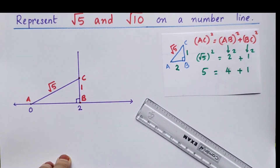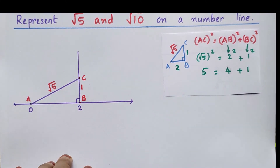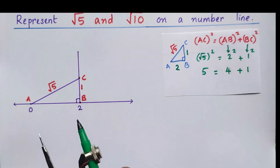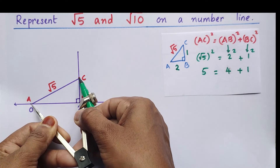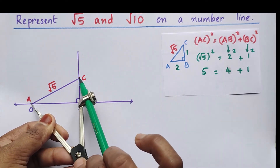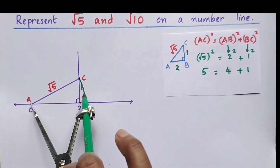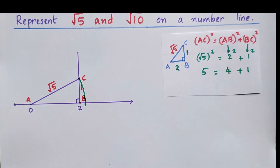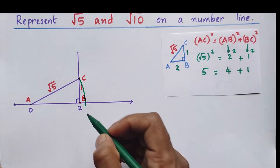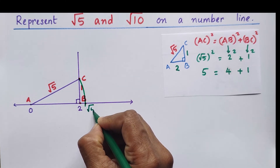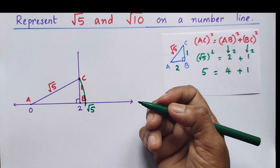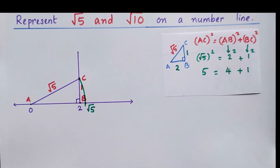Now we have to represent root 5 on the number line. For that, we take a compass with radius equal to root 5, then draw an arc. It will cross the number line, and that point represents root 5. Hope you understand how to represent root 5 on the number line.